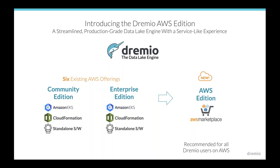If you're used to Dremio already, you'll know you could have used us in lots of different clouds, including AWS, and we have multiple ways to deploy Dremio into an AWS environment. With the new Dremio AWS Edition, we've really streamlined this to make it a lot easier to get up and running and frankly to focus on the analytics you want to do rather than the infrastructure. We're delivering a production-grade data lake engine, and this is really the recommended path for AWS users.